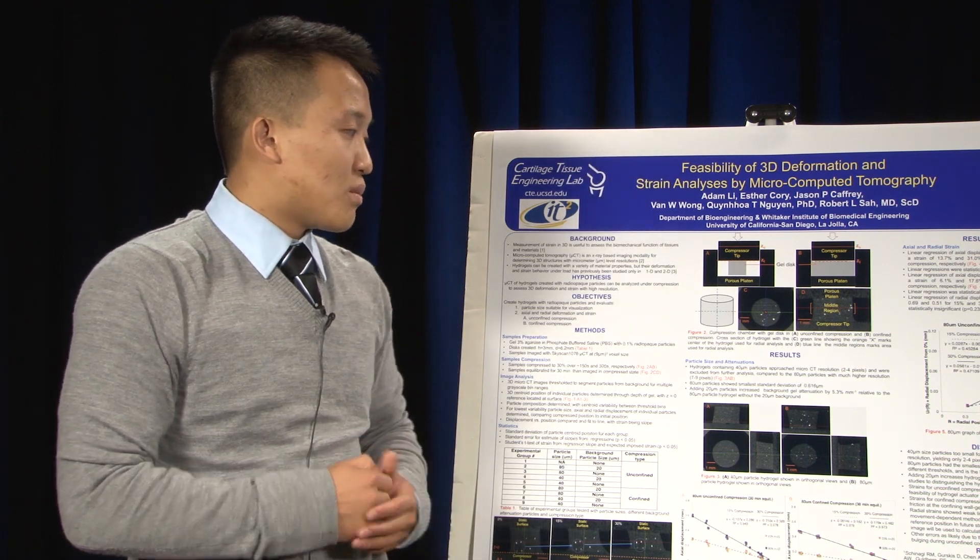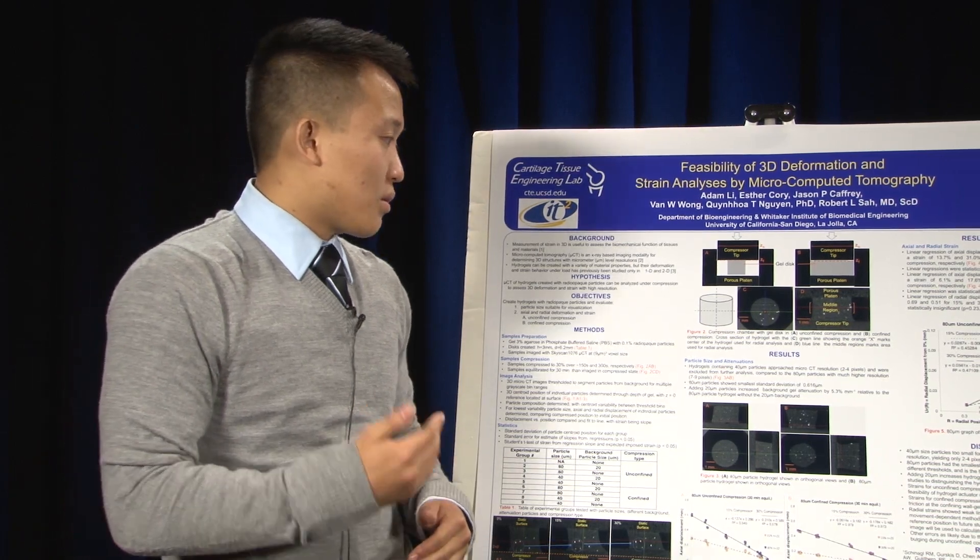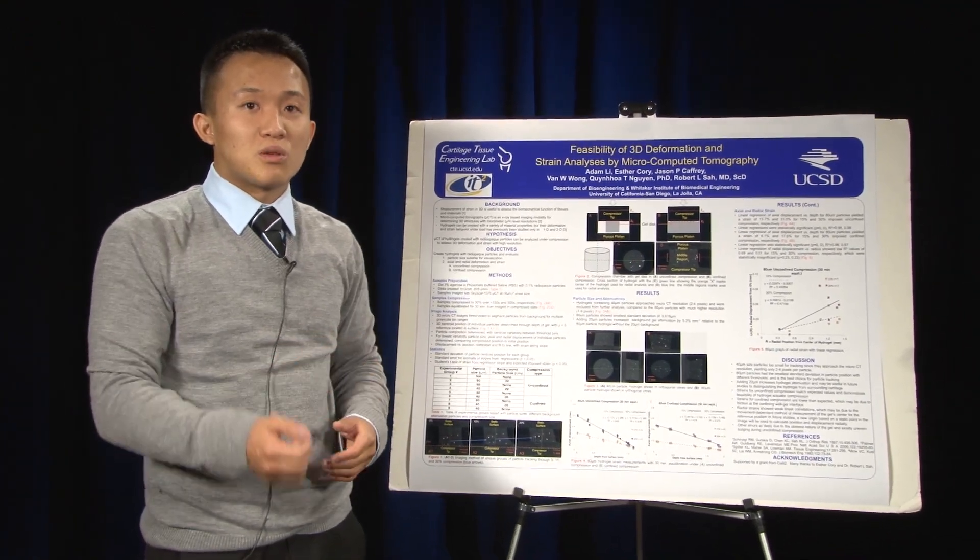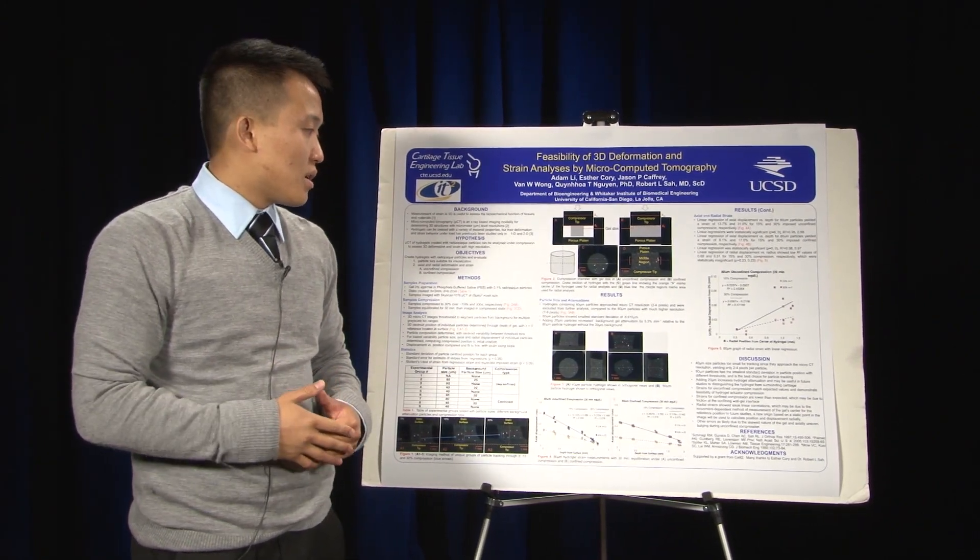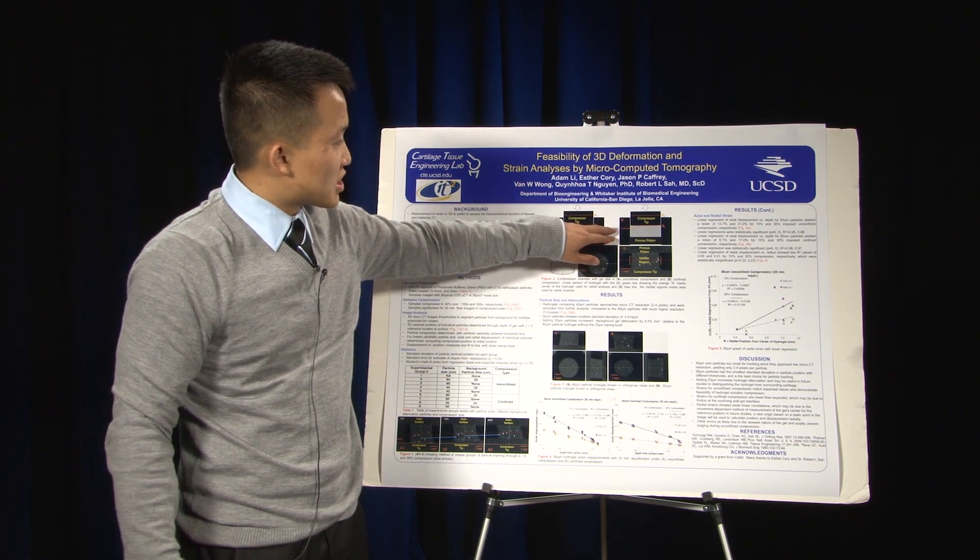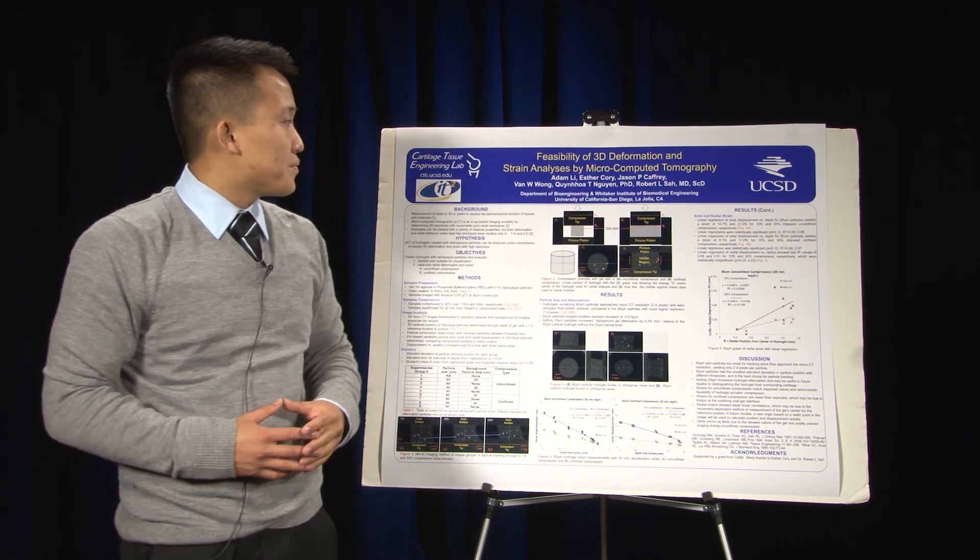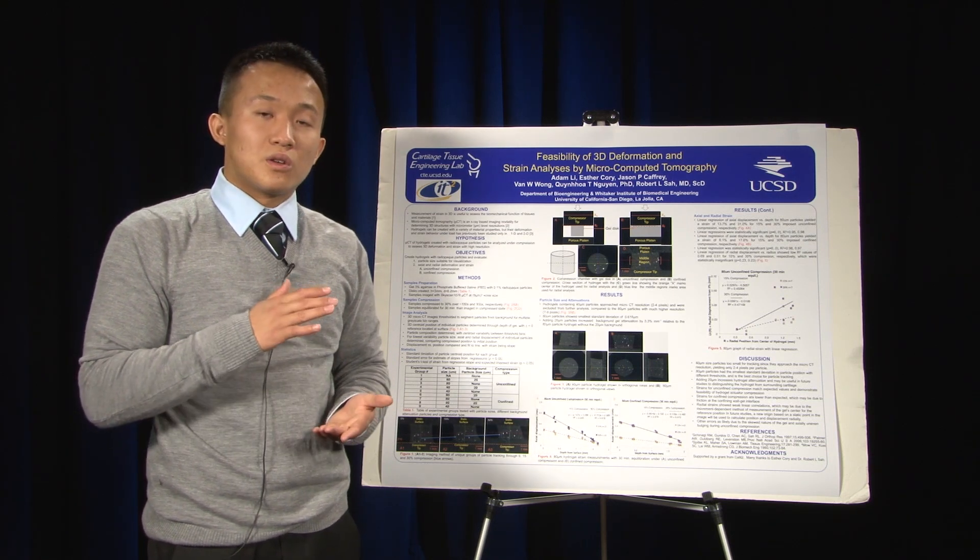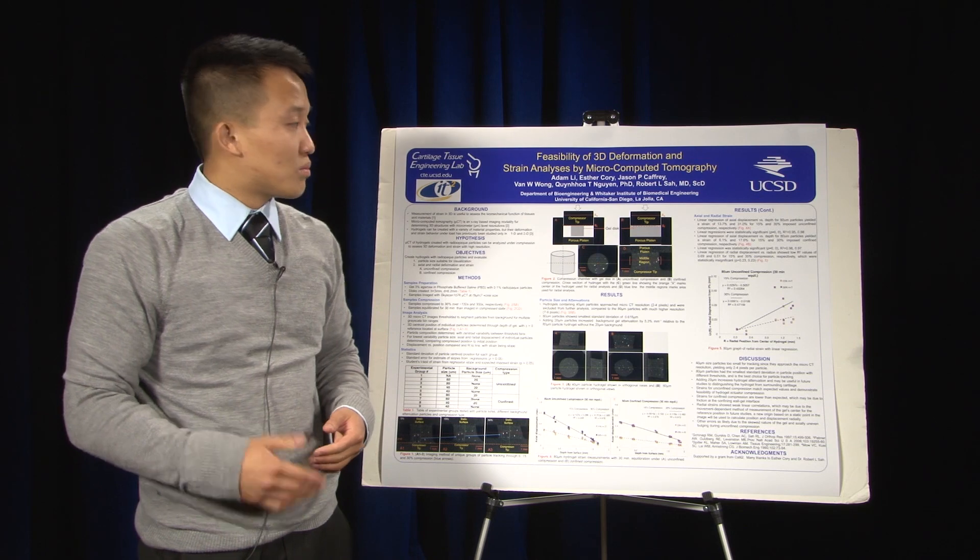The strains for unconfined compression definitely did match expected values and demonstrate feasibility of hydrogel compression. As you remember it was 13.7% and 31% for 15% and 30% respectively. The strains for confined compression were lower than expected, but this could have been due to friction at the confining wall surfaces, as you remember from the schematic in Figure 2. Over here, where the hydrogel and the confining wall touched, they could have produced friction that could have alleviated some of the strain felt by the hydrogel, and that could have been the cause of the low strain behaviors.